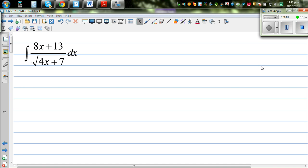Let us integrate this integral, 8x plus 13 over square root of 4x plus 7. So whenever you have an integral like this, a good method is to do a u substitution.